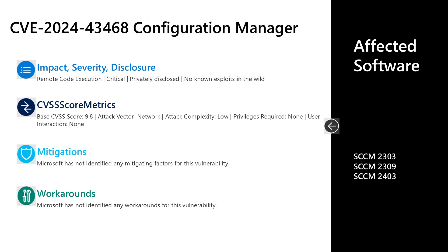Finally, the last vulnerability is CVE-2024-43468, a critical remote code execution vulnerability in System Center Configuration Manager. This one was privately disclosed with no known exploits in the wild. It has a CVSS base score of 9.8 on that scale of 10. The attack vector is over the network, attack complexity is low, no privileges are required, and no user interaction is required. There are no documented mitigations or workarounds. The affected software is Configuration Manager versions 2303, 2309, and 2403.